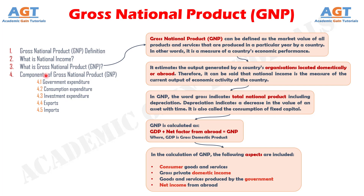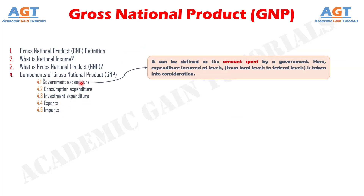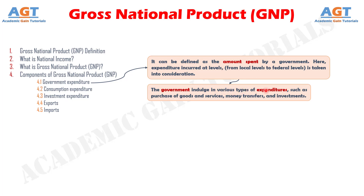Now let's discuss the components of Gross National Product. The components of GNP include government expenditure, consumption expenditure, investment expenditure, exports, and imports. Government expenditure can be defined as the amount spent by a government. Expenditure incurred at all levels, from local levels to federal levels, is taken into consideration. The government engages in various types of expenditures such as purchase of goods and services, money transfers, and investments.